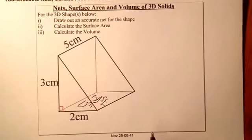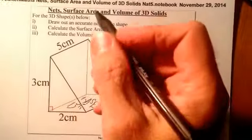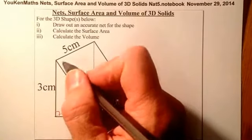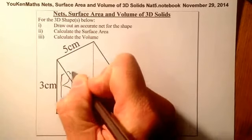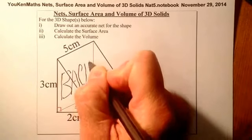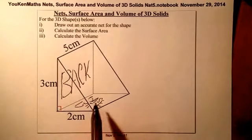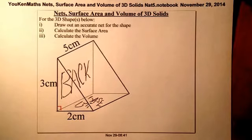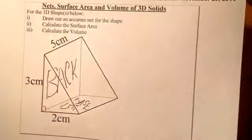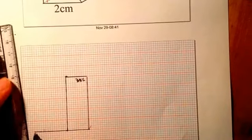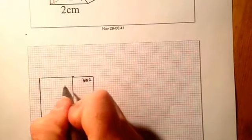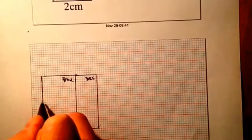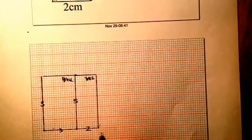I'll then look at the face that's here and I'll call that the back. I'm going to join it onto the base, just as I net that. The back is three by five — so I go along three and up five — and that should be that one completed. So the back: three there, five there, this one five, and two for the base.